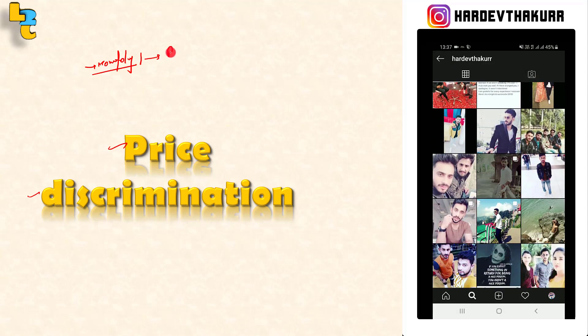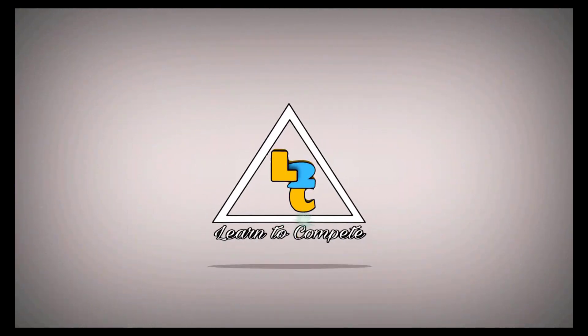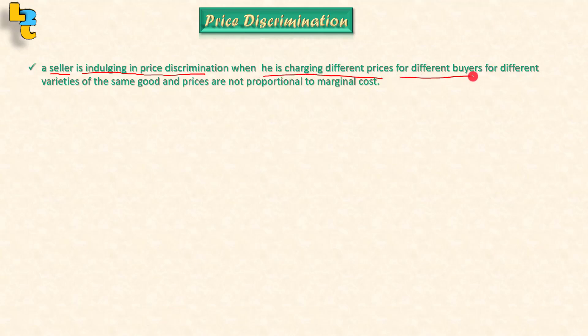We will see how monopoly relates to price discrimination. A seller is indulging in price discrimination when he is charging different prices for different buyers for different varieties of the same good, and prices are not proportional to marginal cost.